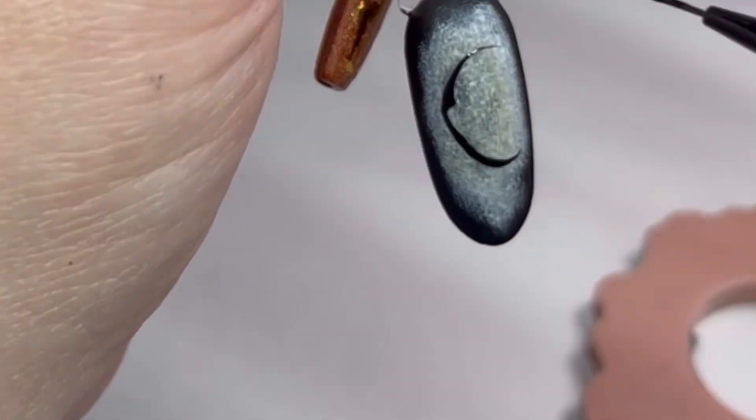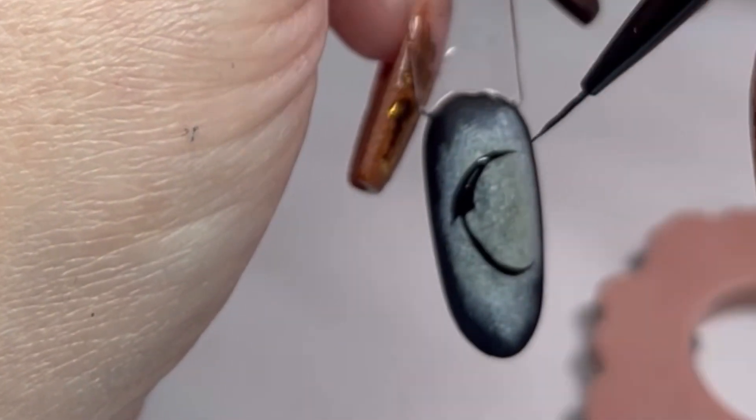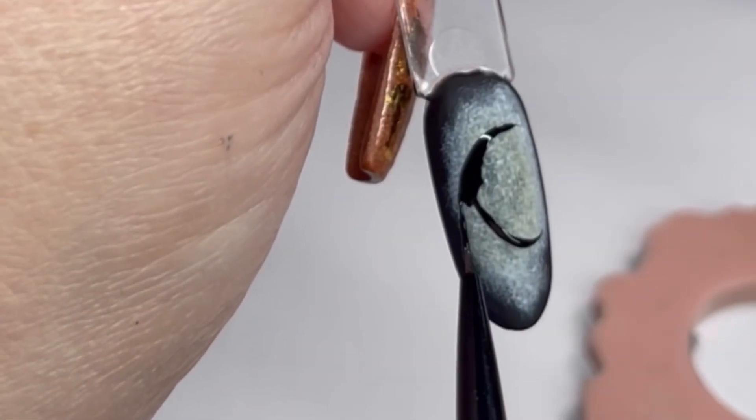Then paint it in matte top coat and cure it, and then you're going to go in with your moon. Very simple, just paint yourself a C.